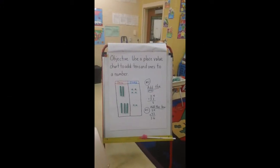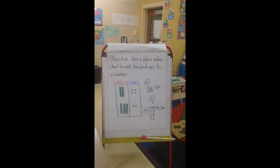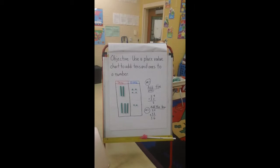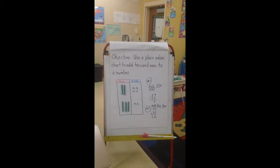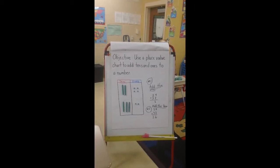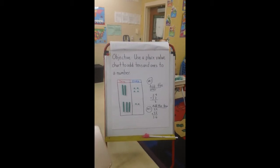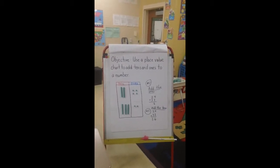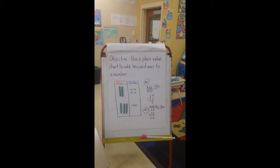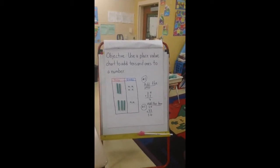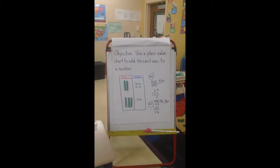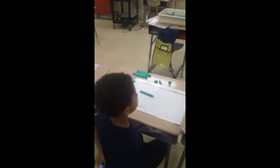Today we are going to use a place value chart to add tens and ones to a number. We're going to review a little bit on how to use our place value chart to make numbers. Let's start and make the number 36.